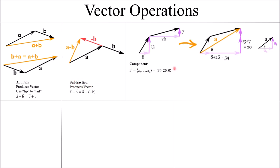Components are important, especially when a vector isn't aligned with your coordinate system. For example, adding X components 8 and 26 gives a total of 34, and adding Y components 13 and 7 gives a total of 20. The final vector A can be written with an X component of 34, a Y component of 20, and a Z component of 0 — that zero representing the dimension coming into and out of the screen.